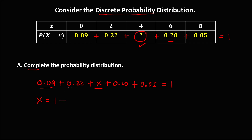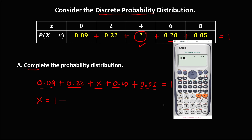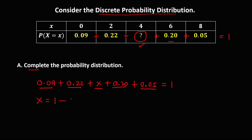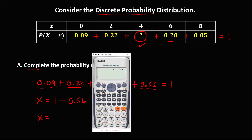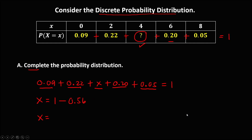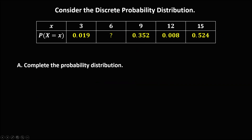To solve for the unknown: x equals 1 minus the sum of the other probabilities. So 0.09 plus 0.22 plus 0.20 plus 0.05 equals 0.56. Therefore x equals 1 minus 0.56, which equals 0.44. So the unknown probability is 0.44.